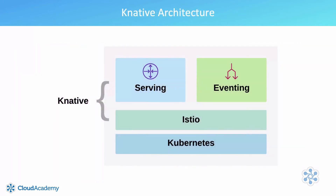Knative is installed into Kubernetes and currently requires version 1.15 or greater. It requires a networking layer to be installed, which is most often chosen to be Istio. Other networking layers exist, such as Ambassador, Contour, Glue, and Courier, any of which can be swapped in to replace Istio. This course will focus on using Istio since it's the promoted network layer for Knative. On top of the networking layer, the Knative serving and eventing components are then installed.